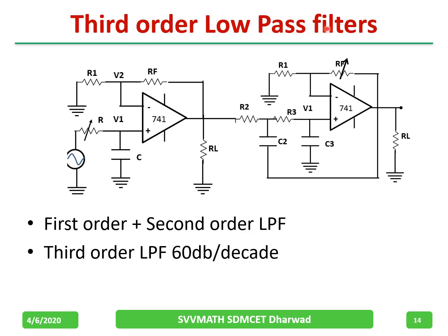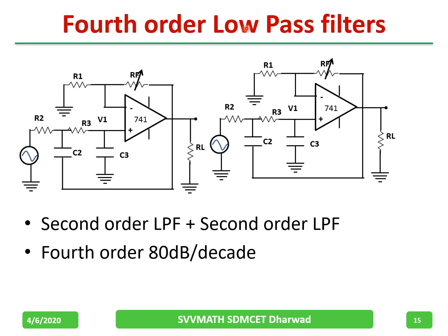A third order low pass filter is obtained by cascading a first order low pass filter and a second order low pass filter, giving a fall rate of 60 dB per decade. For a fourth order filter, cascade a second order low pass with another second order low pass filter to get a fourth order low pass filter with an 80 dB per decade roll-off.